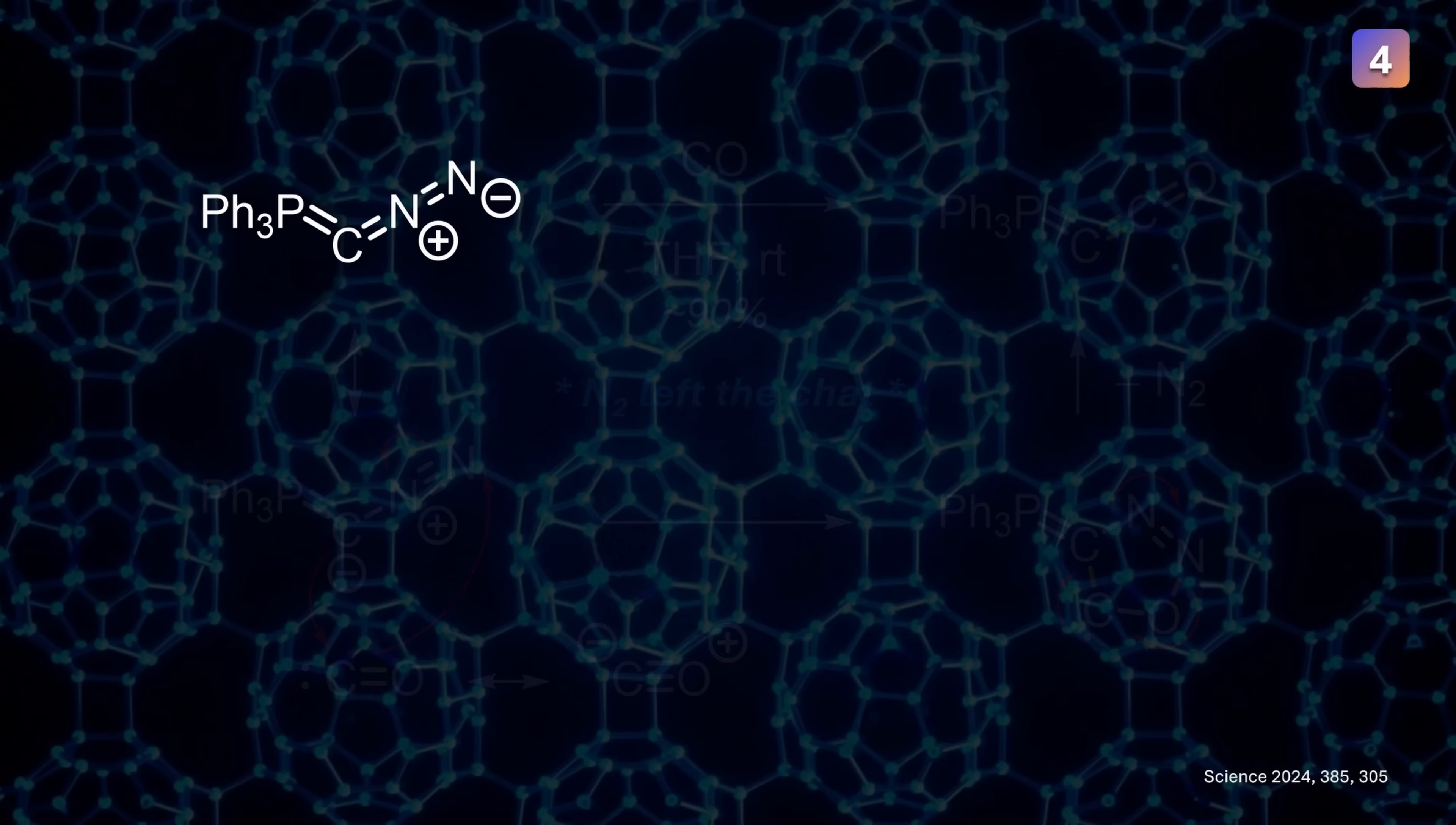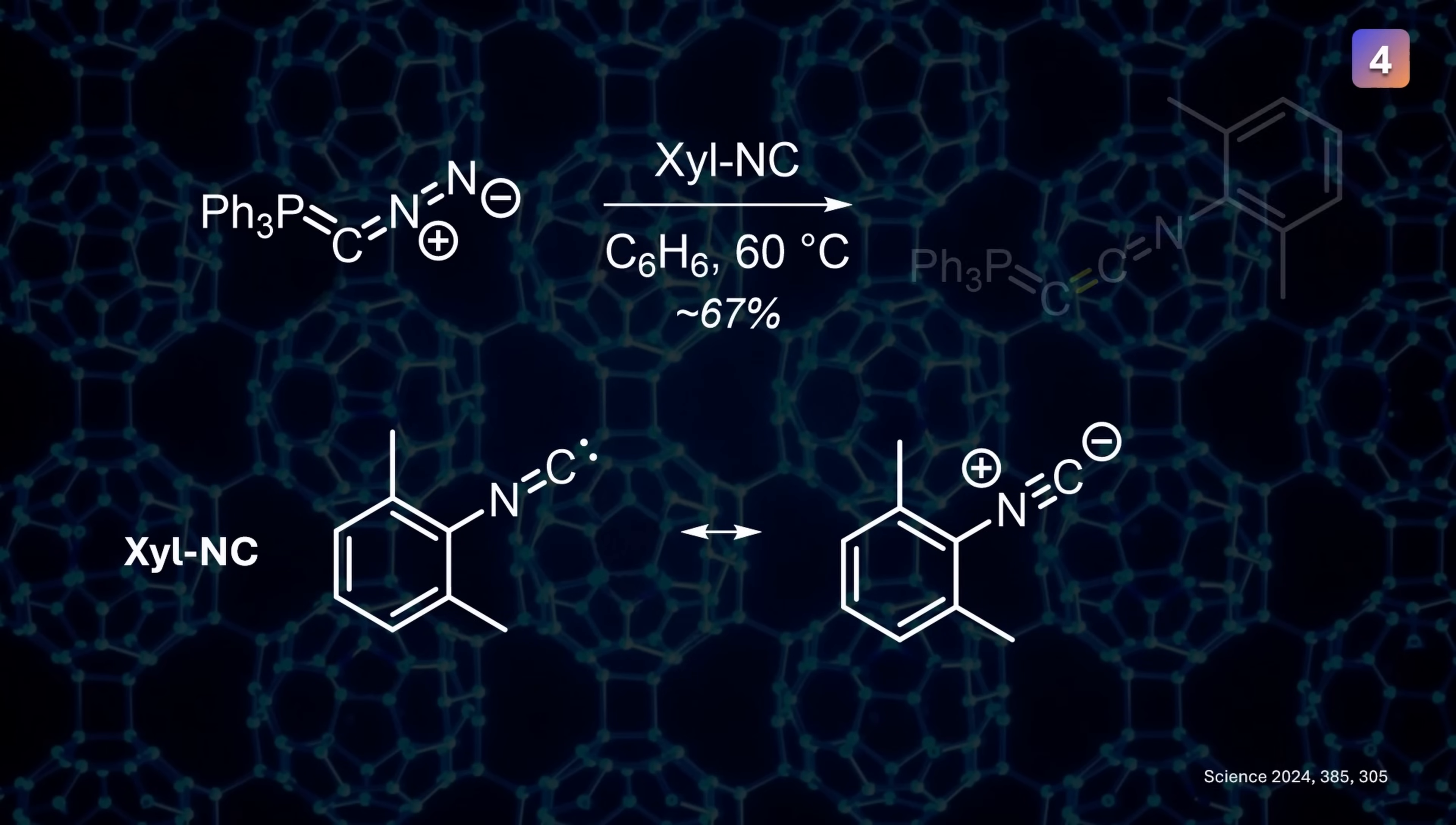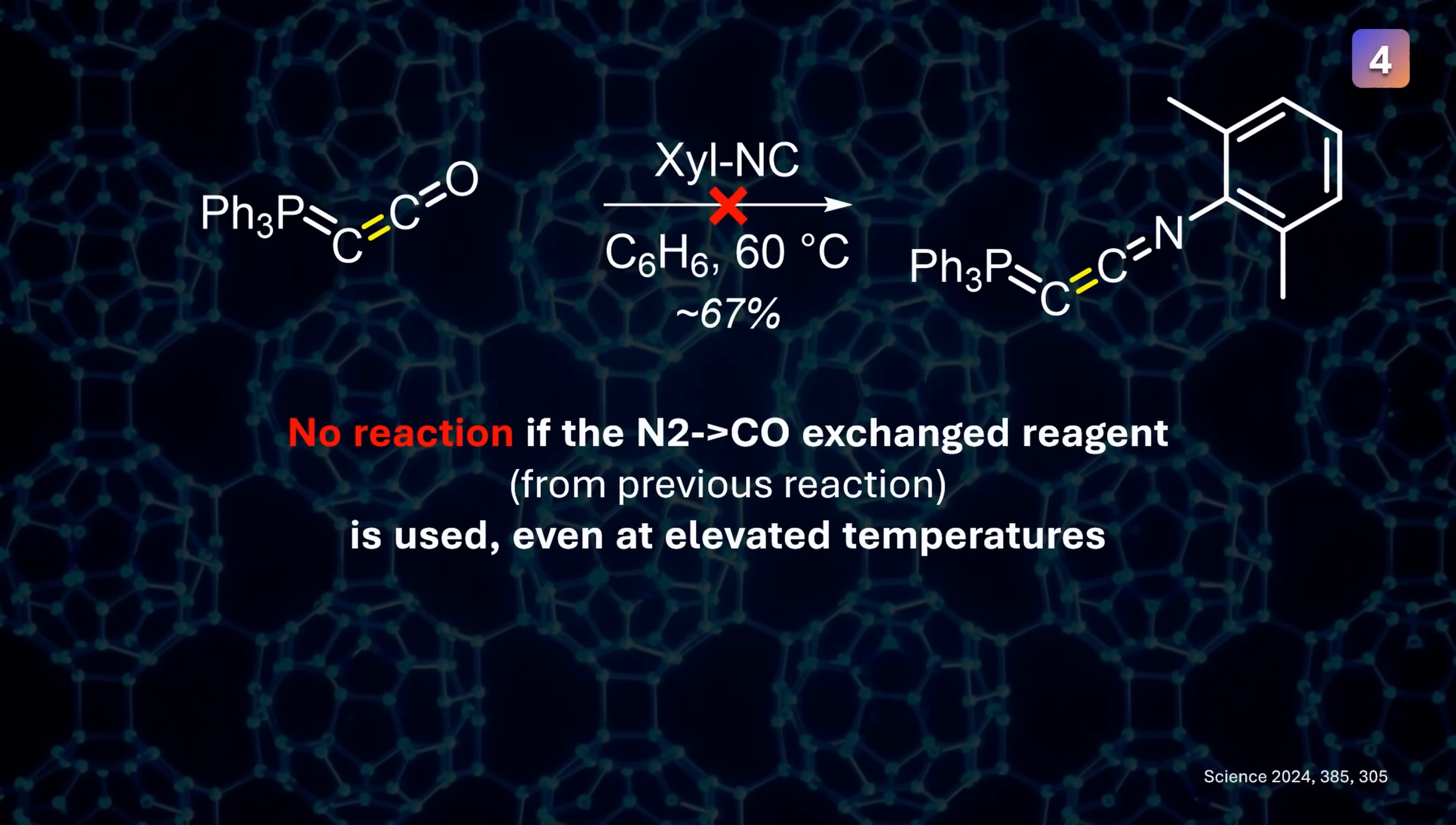The same was observed in reactions with isocyanides or other stabilized carbenes. So our reagent transferred the phosphoryl ylid group, making it useful for synthesis of complex allene structures. By the way, these reactions could not be replicated by using the product obtained after N2 to CO exchange. Thus, the N2 group in our reagent is critical for success. But does that mean the N2 group always disappears?